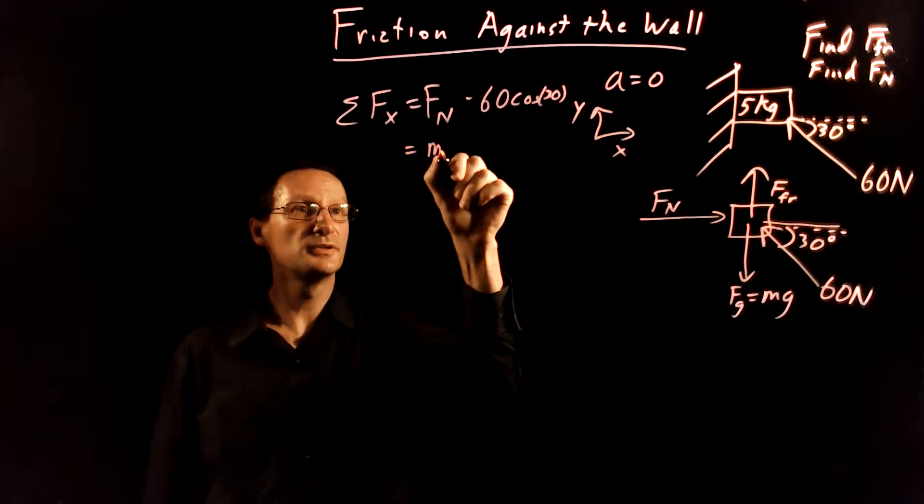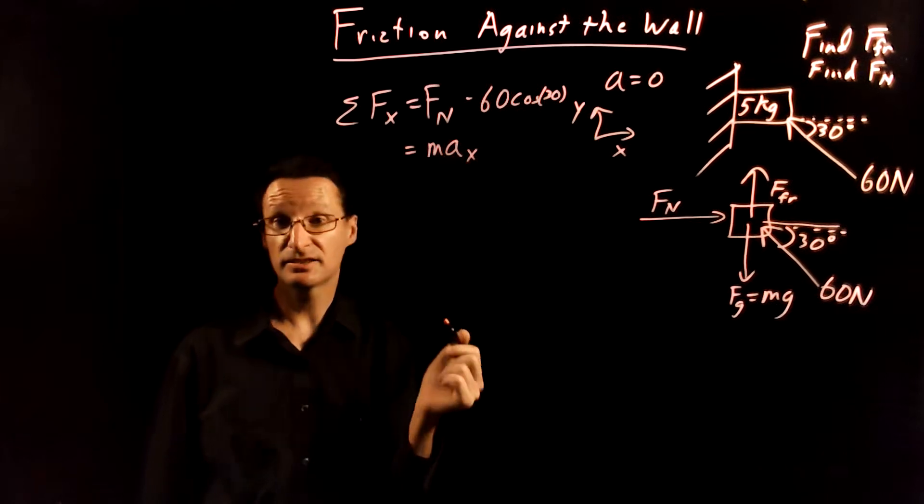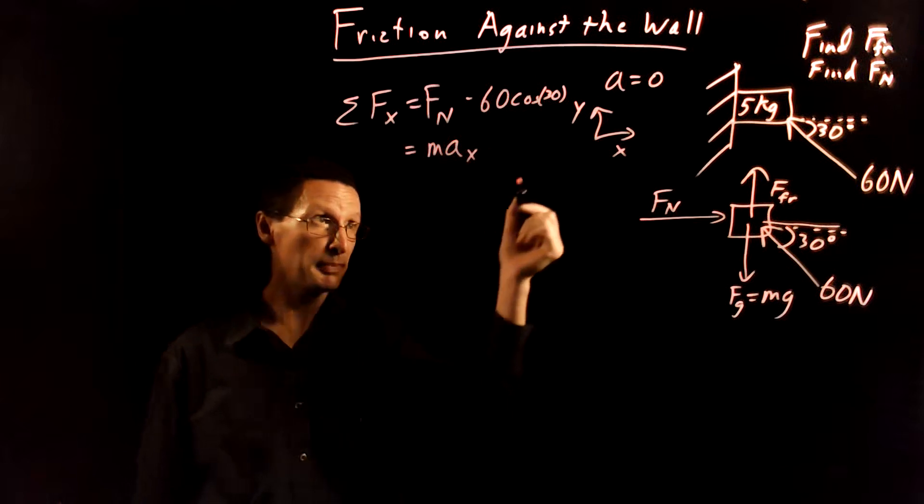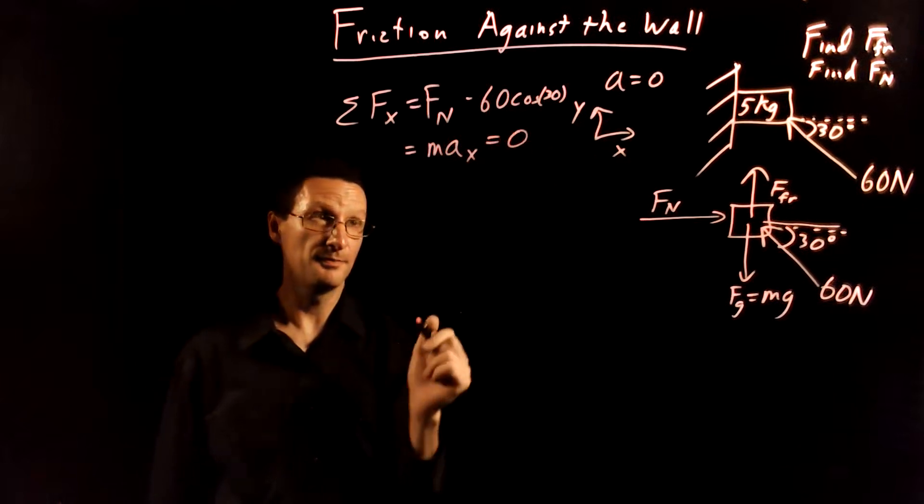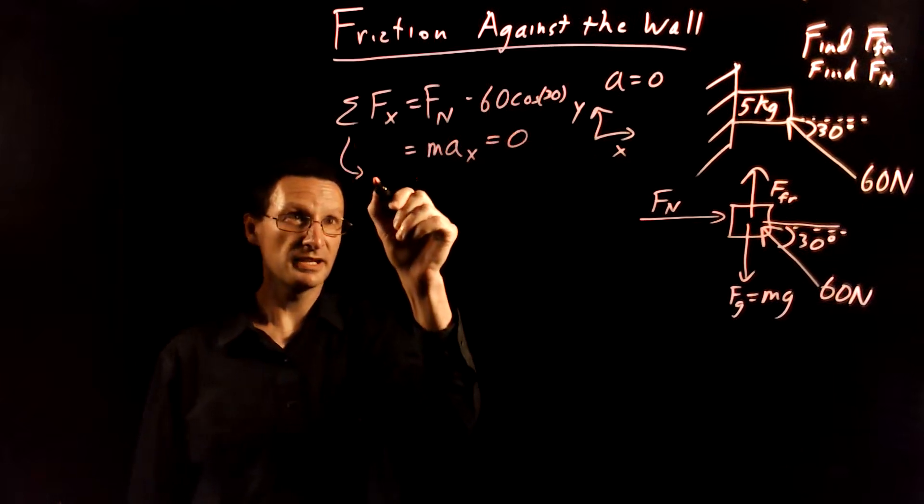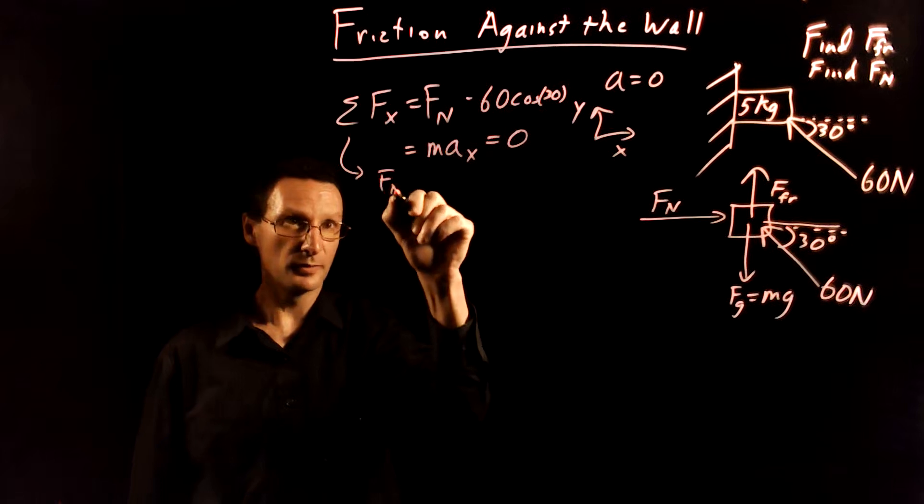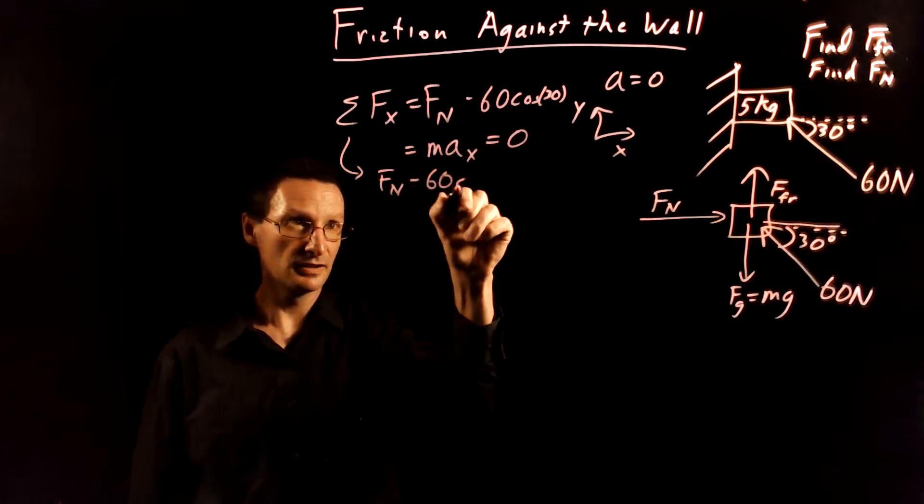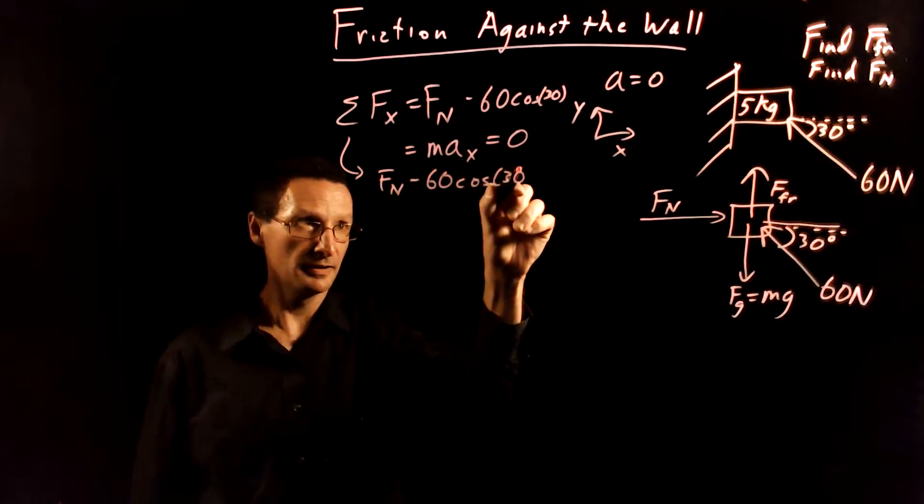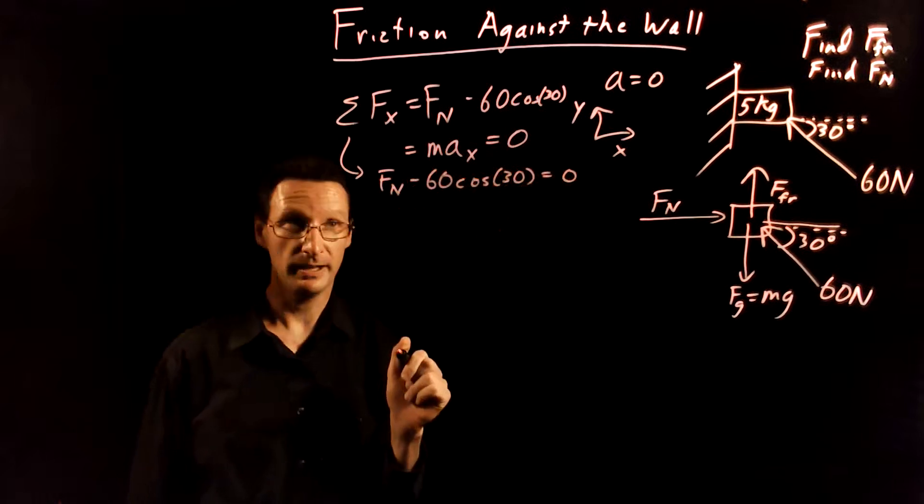Okay and then I'm going to set this equal to ma in the x direction but a in the x direction is zero. Okay so this tells me that the normal force minus 60 cosine of 30 is equal to zero. Okay that's good.